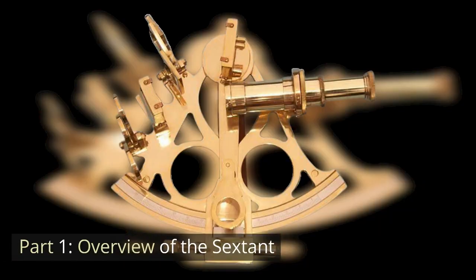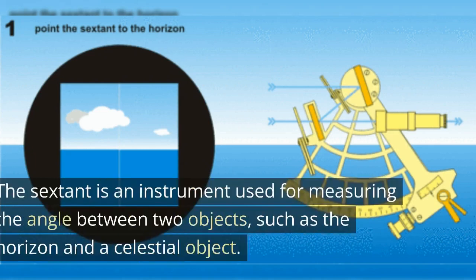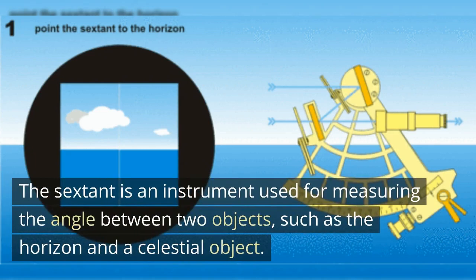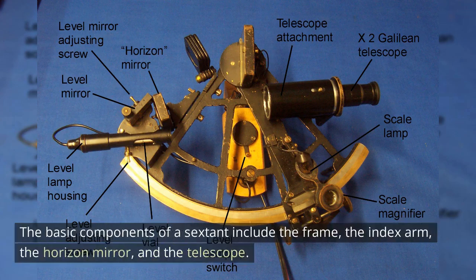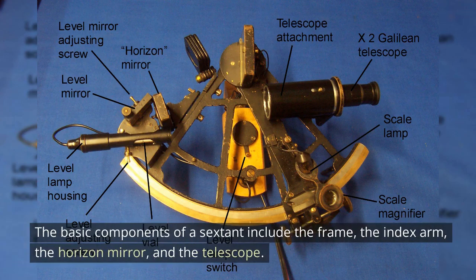Overview of the sextant. The sextant is an instrument used for measuring the angle between two objects, such as the horizon and a celestial object. The basic components of a sextant include the frame, the index arm, the horizon mirror, and the telescope.